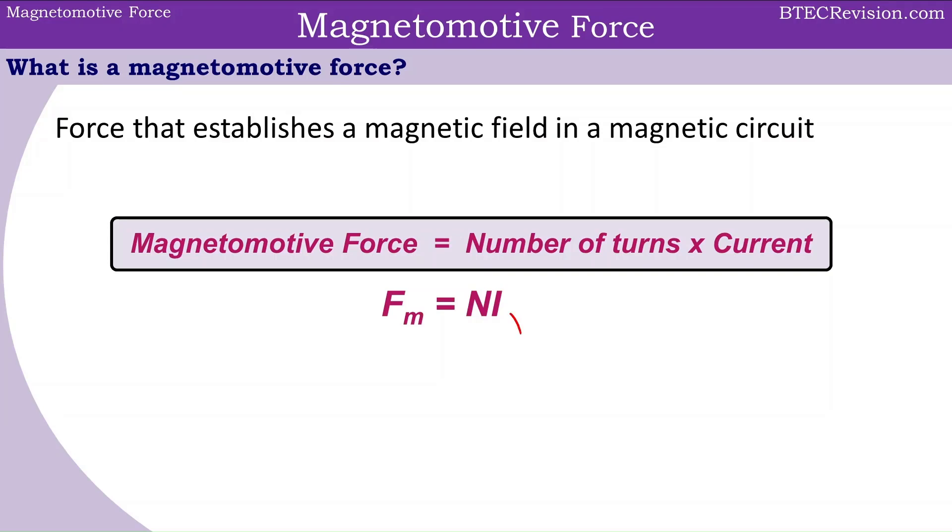The units for current is amps. The number of turns doesn't really have a unit but you can consider it to be turns. For example, we could have one turn or ten turns of a coil, and therefore the magnetomotive force is going to have a unit of ampere turns or AT.